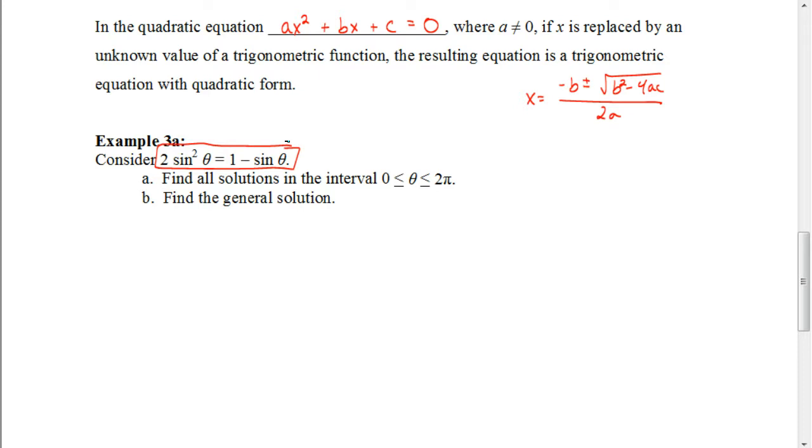Recall that in a quadratic equation, which is in the form ax squared plus bx plus c equals zero, a, b, and c can be any number as long as a doesn't equal zero because then it's not a quadratic anymore.